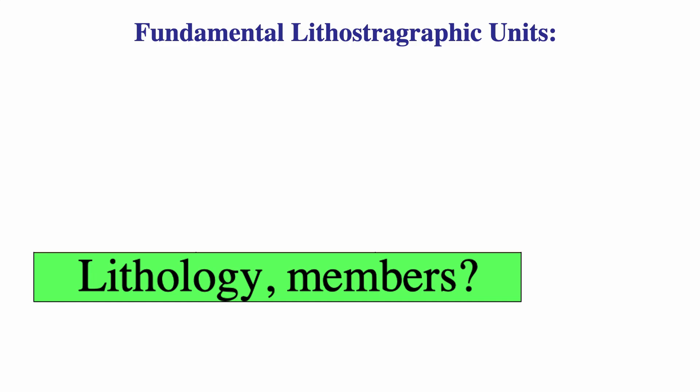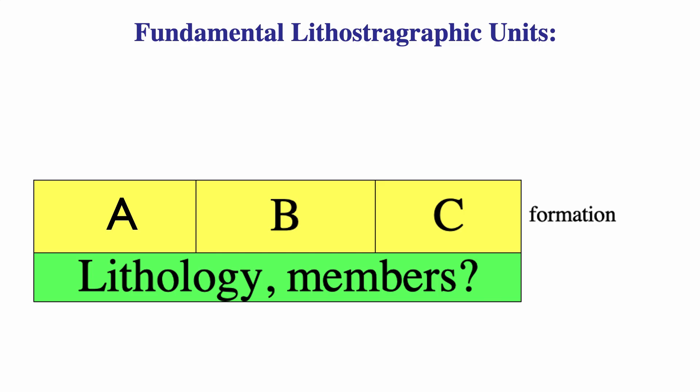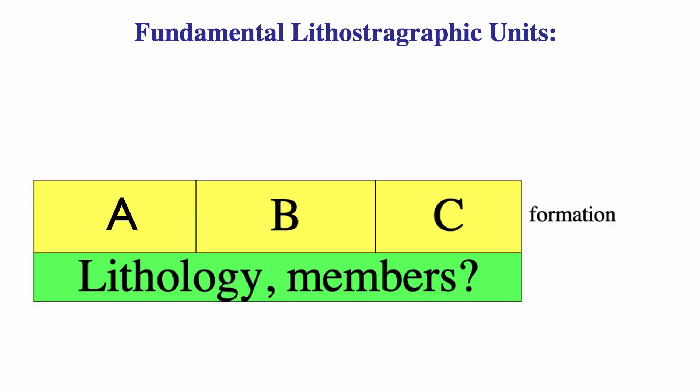A group of members forms a formation. Here we have three formations: A, B, and C. Formations are really important because, by definition, they are mappable units — you can do cartography with a formation. That's why formation is such an important definition in the lithostratigraphic subdivision.